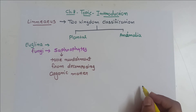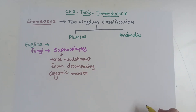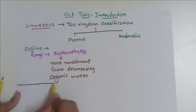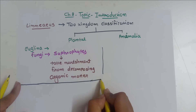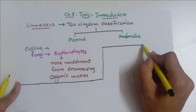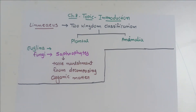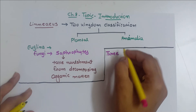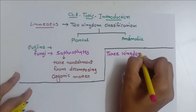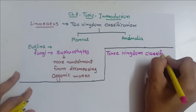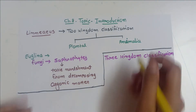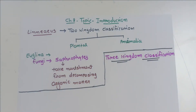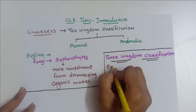Then came the three-kingdom classification, given by Ernst Haeckel. The two-kingdom classification given by Linnaeus had many limitations, as it was an initial and basic classification. The three-kingdom classification was proposed to address those shortcomings.